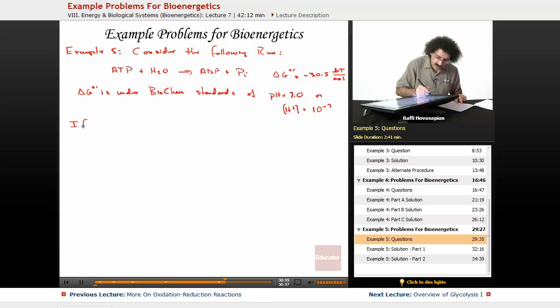Now, here is our question. If we drop the pH to 4.0 from 7.0, in other words, if we make this environment more acidic,